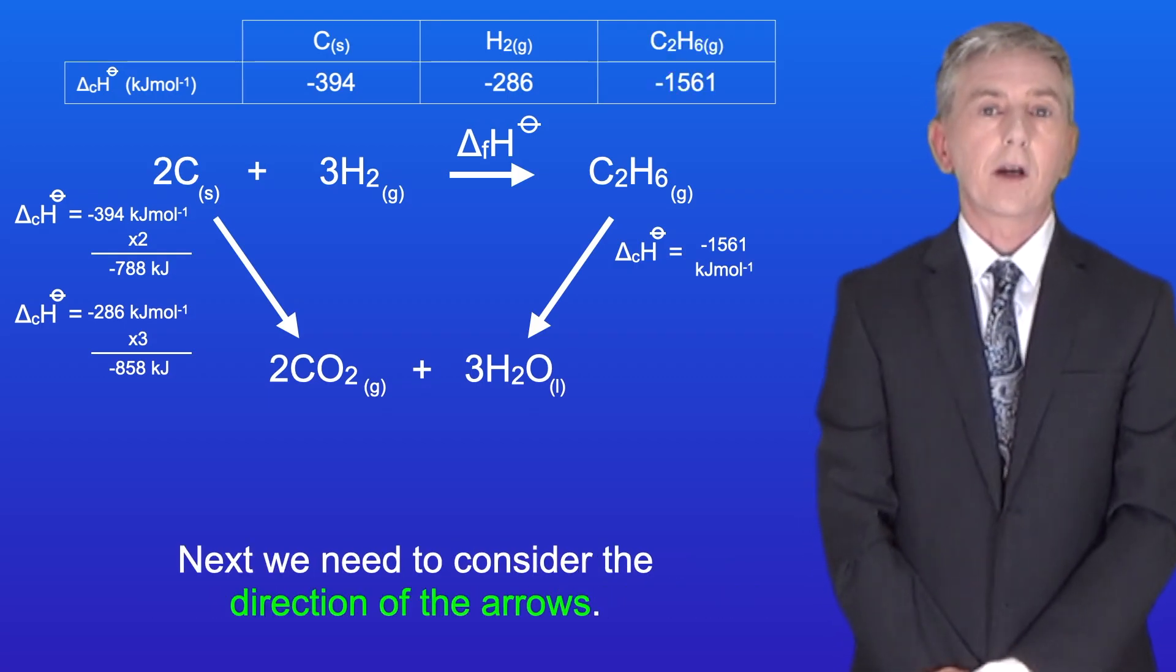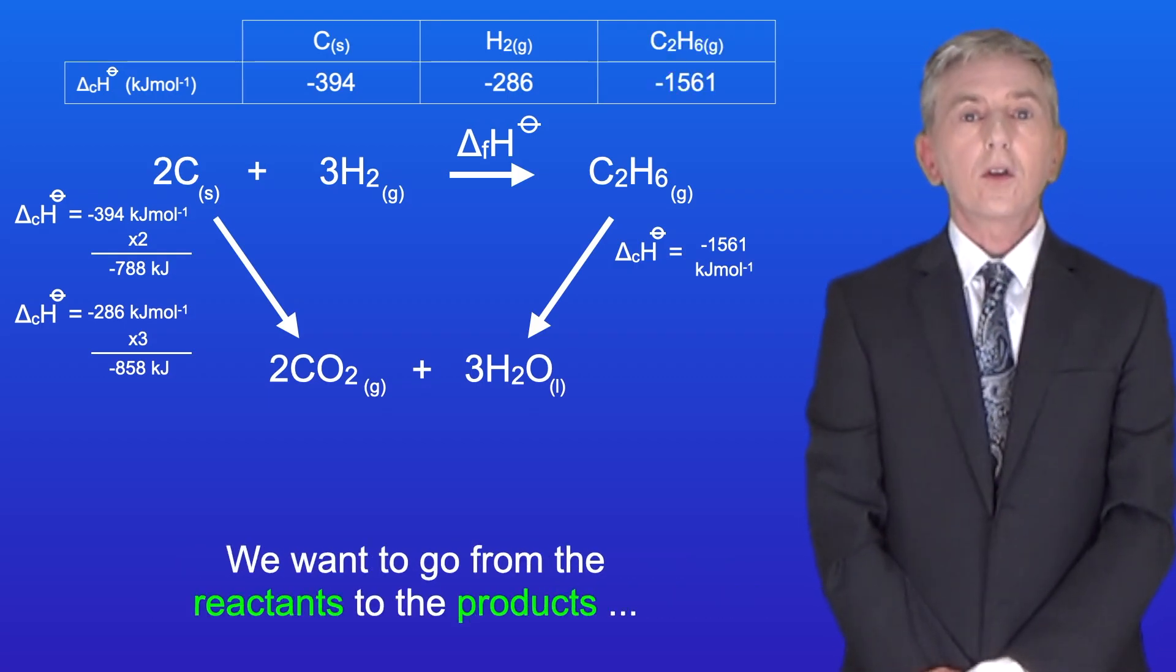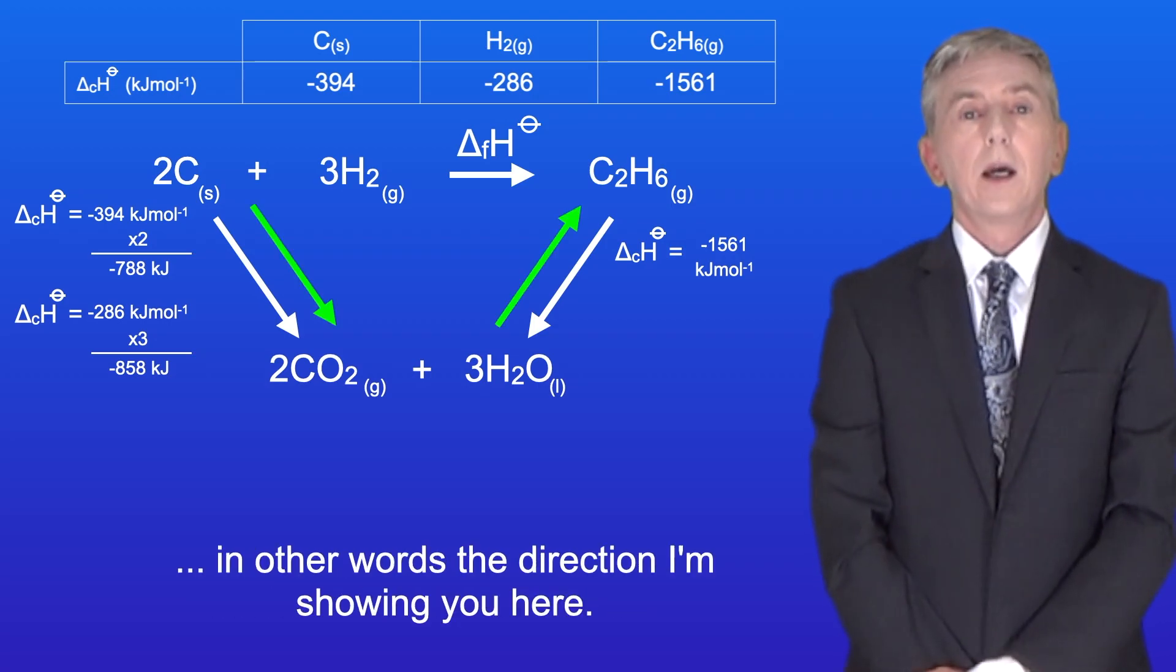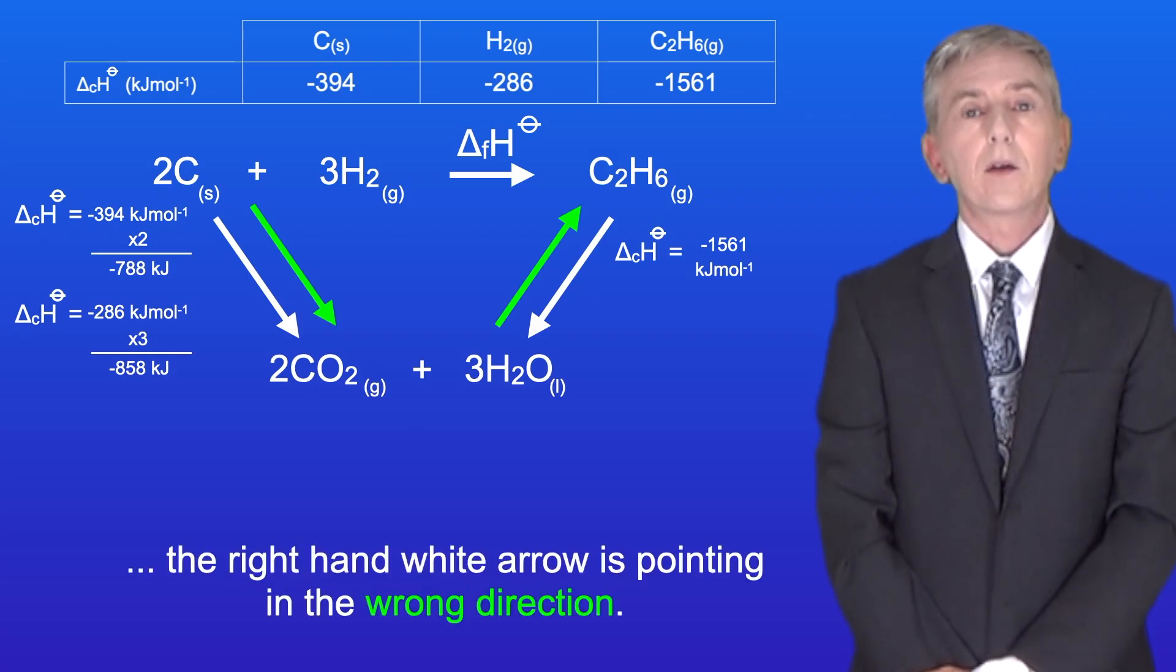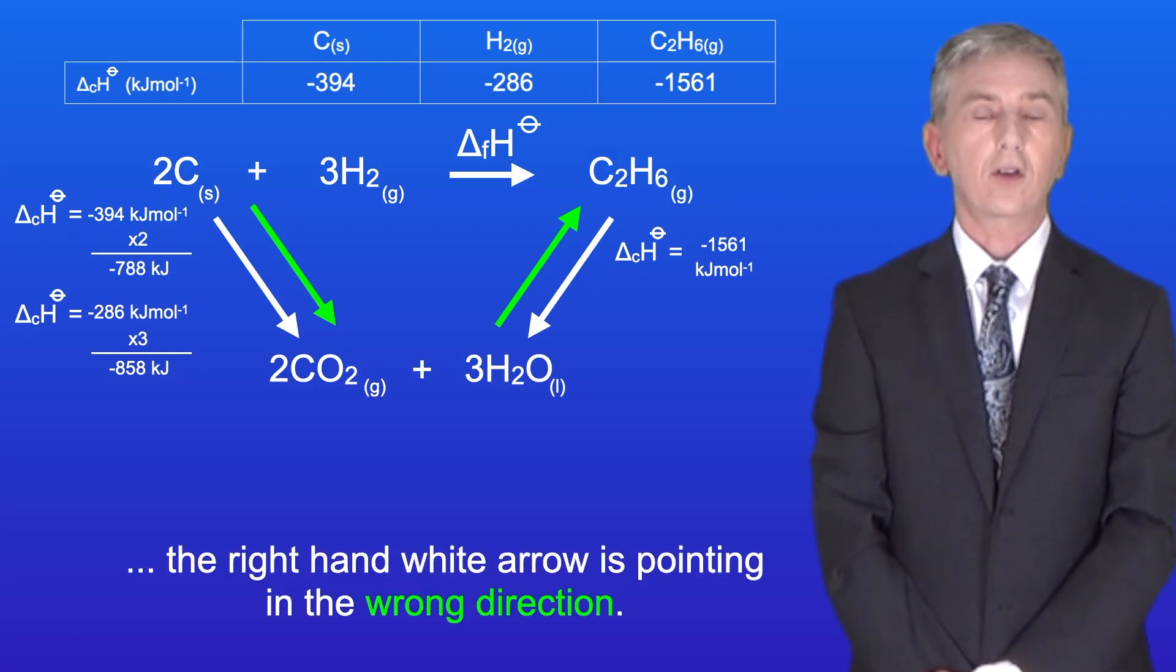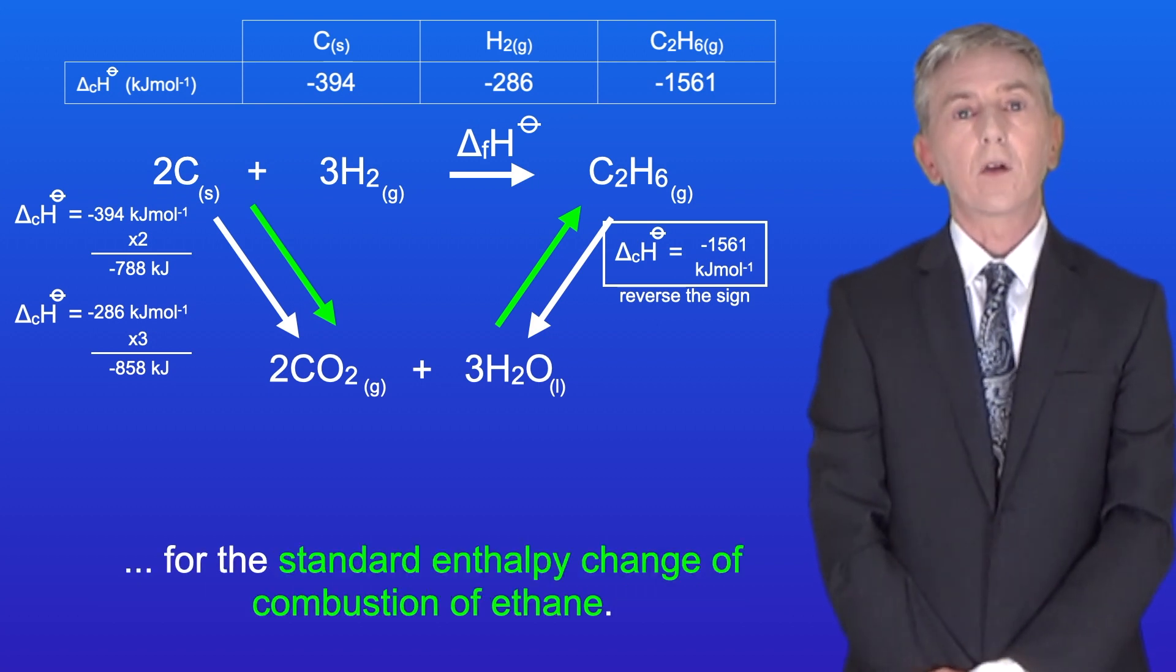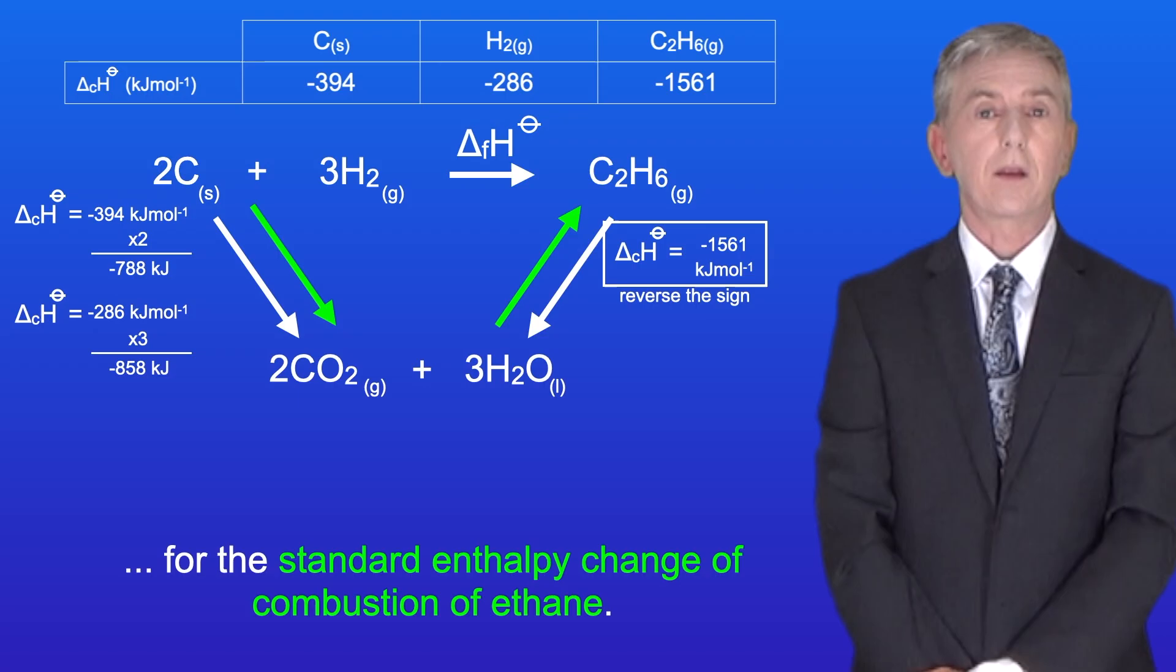Next, we need to consider the direction of the arrows. We want to go from the reactants to the products, in other words the direction I'm showing you here. However, as you can see, the right-hand white arrow is pointing in the wrong direction. This means that when we do the calculation, we need to reverse the sign for the standard enthalpy change of combustion of ethane.